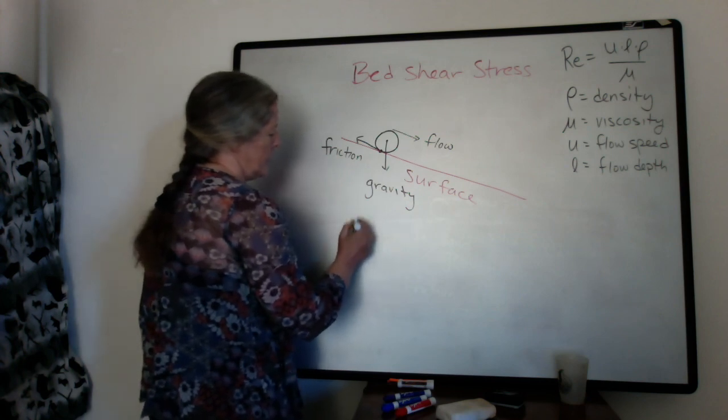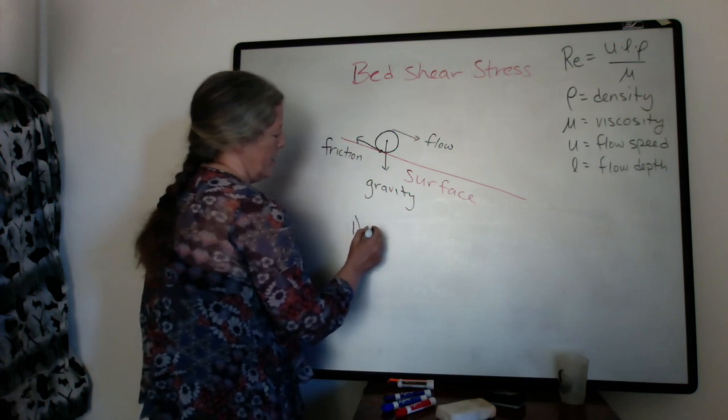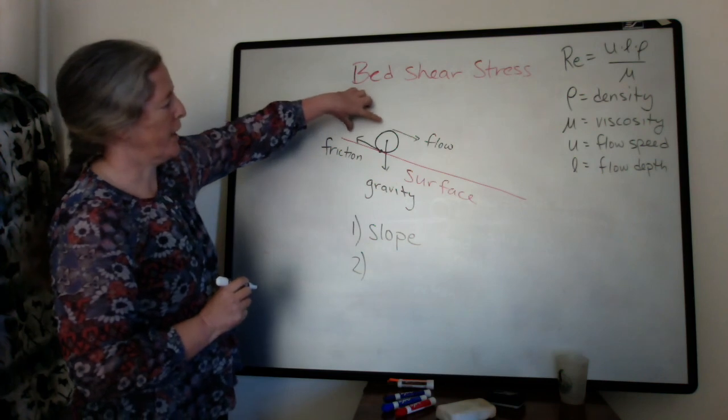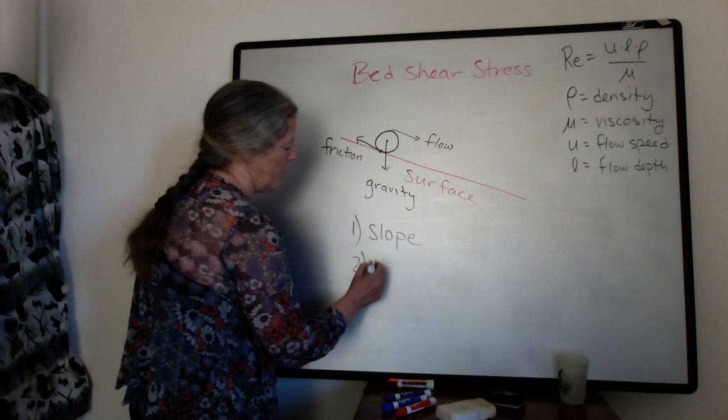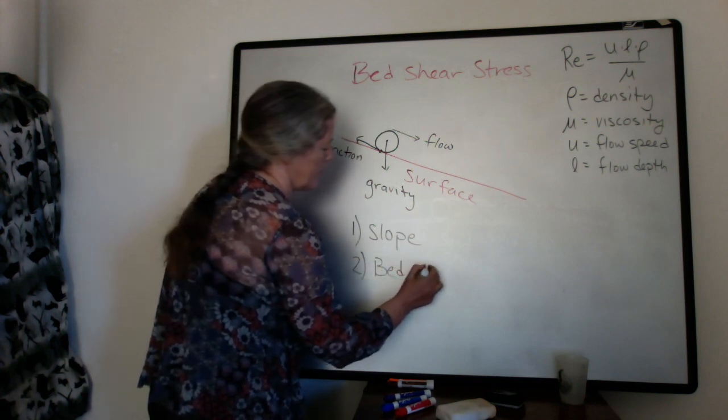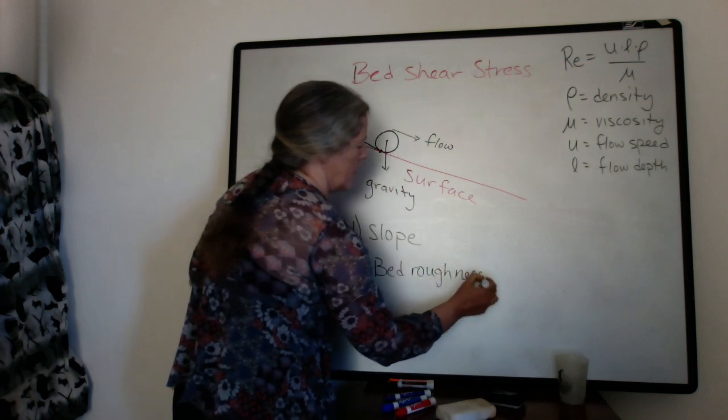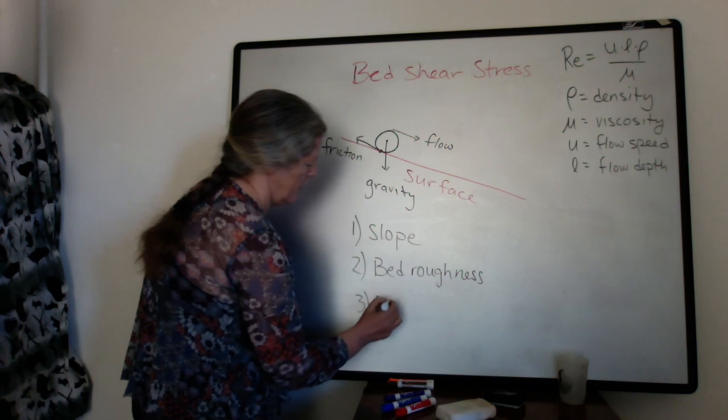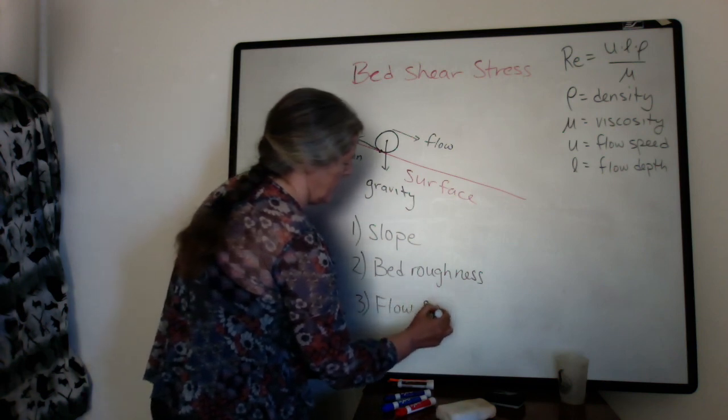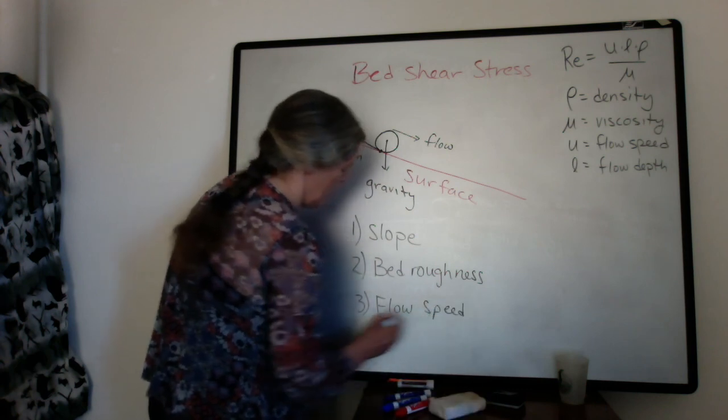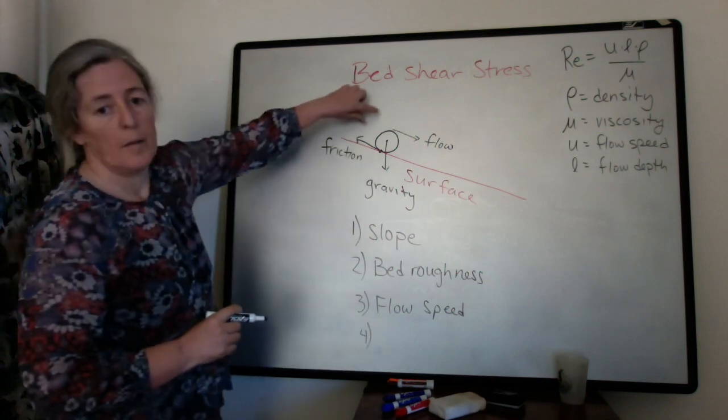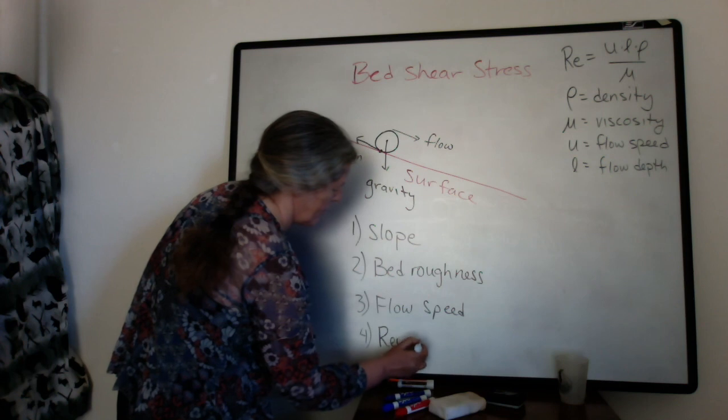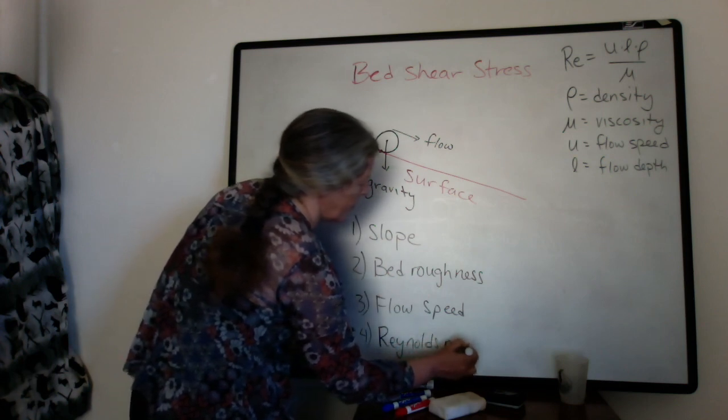So the amount is influenced by the slope of the surface. And then it's influenced by the factors that affect the flow and the friction. And one of those is actually the bed roughness. And it's influenced by the flow speed. And it's also influenced by how much turbulence you have and what the Reynolds number is.